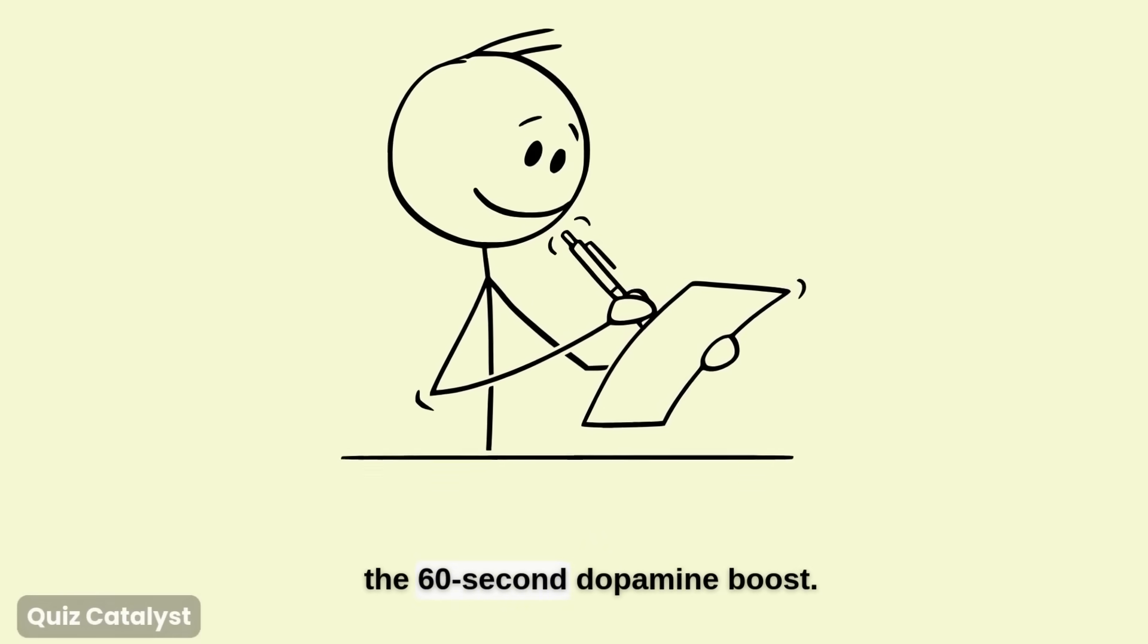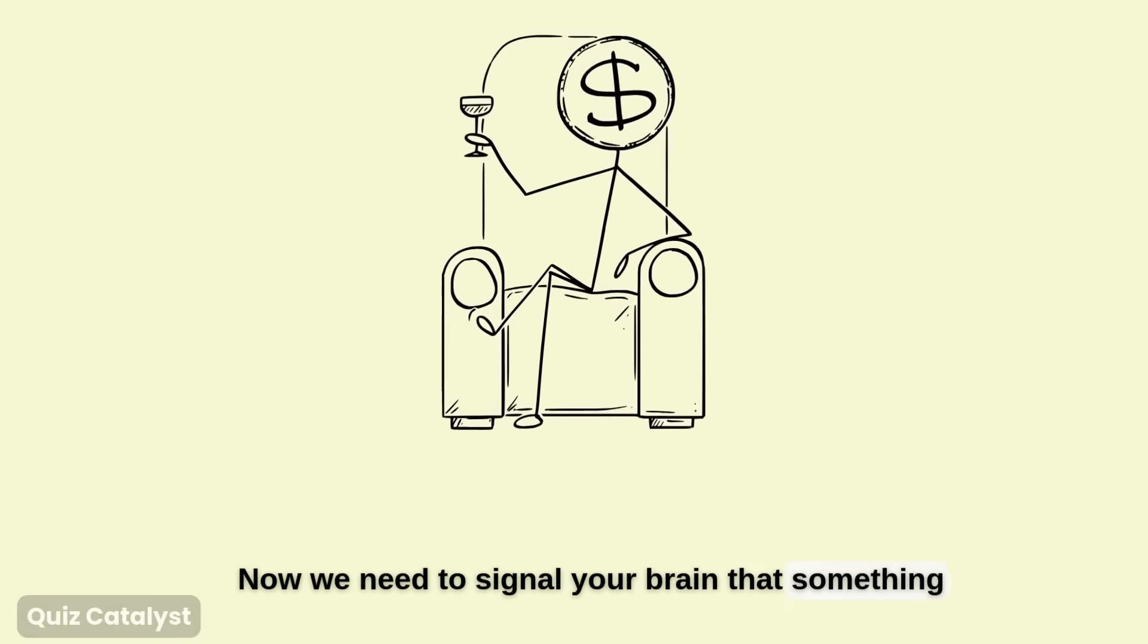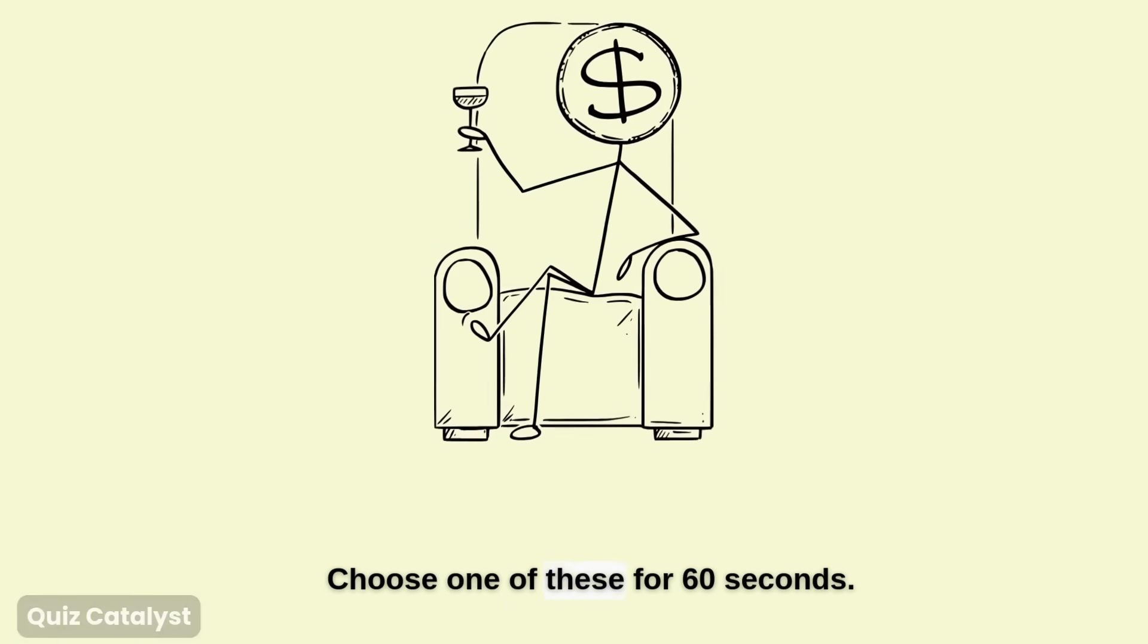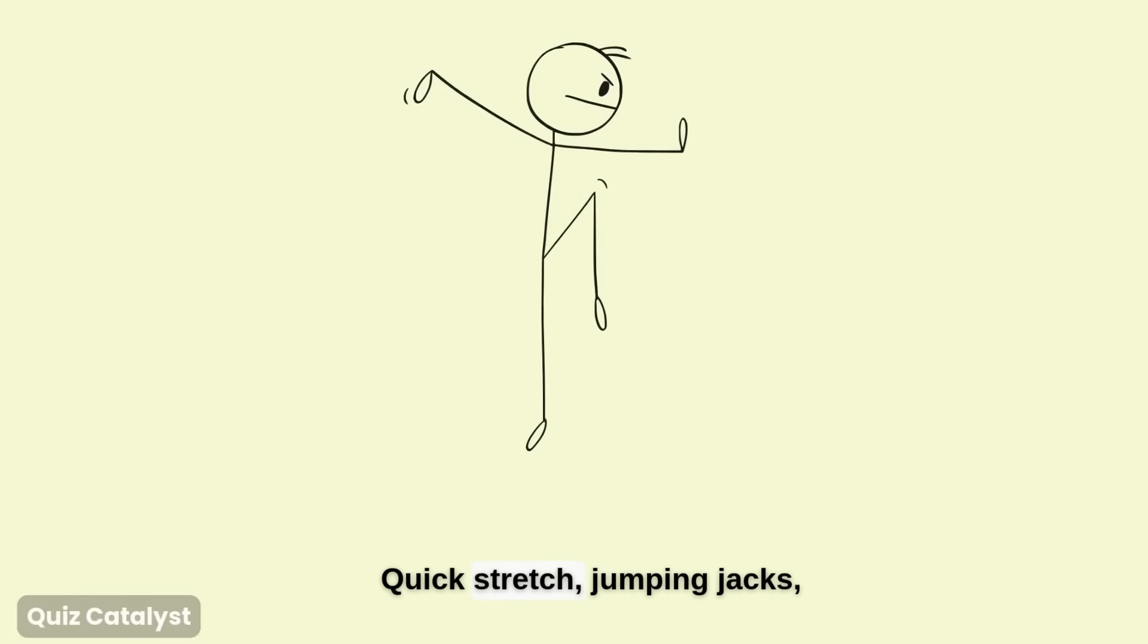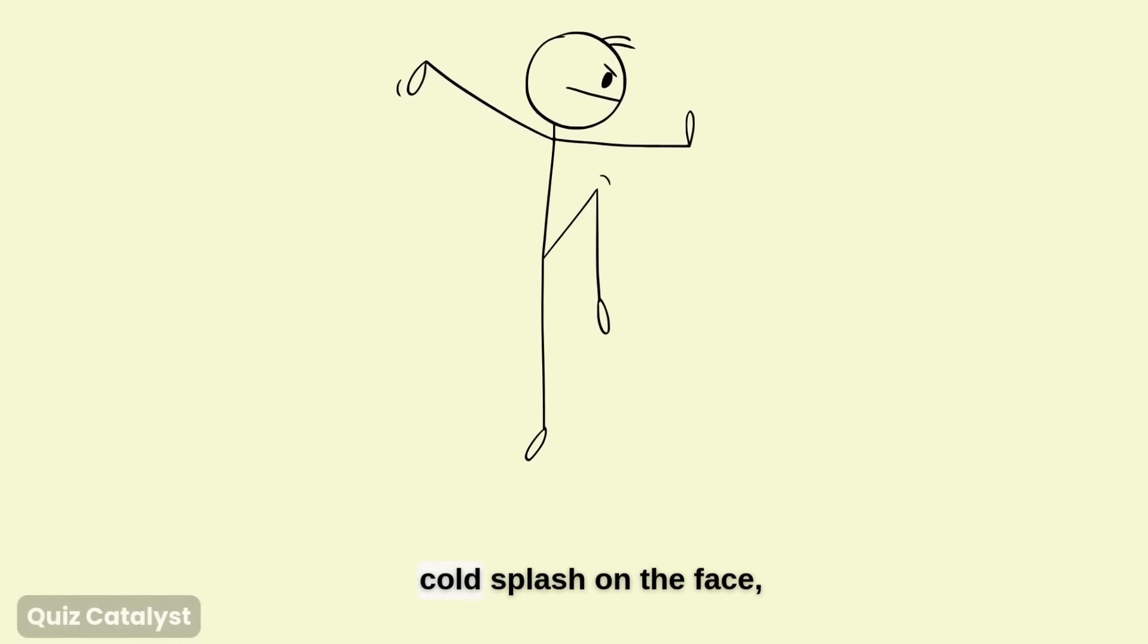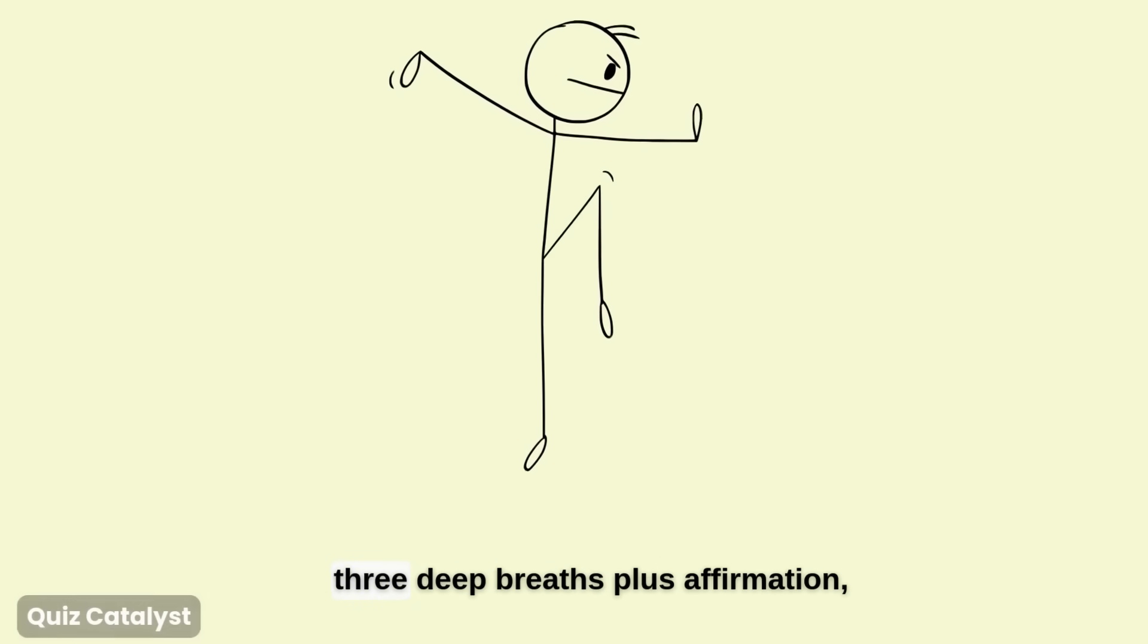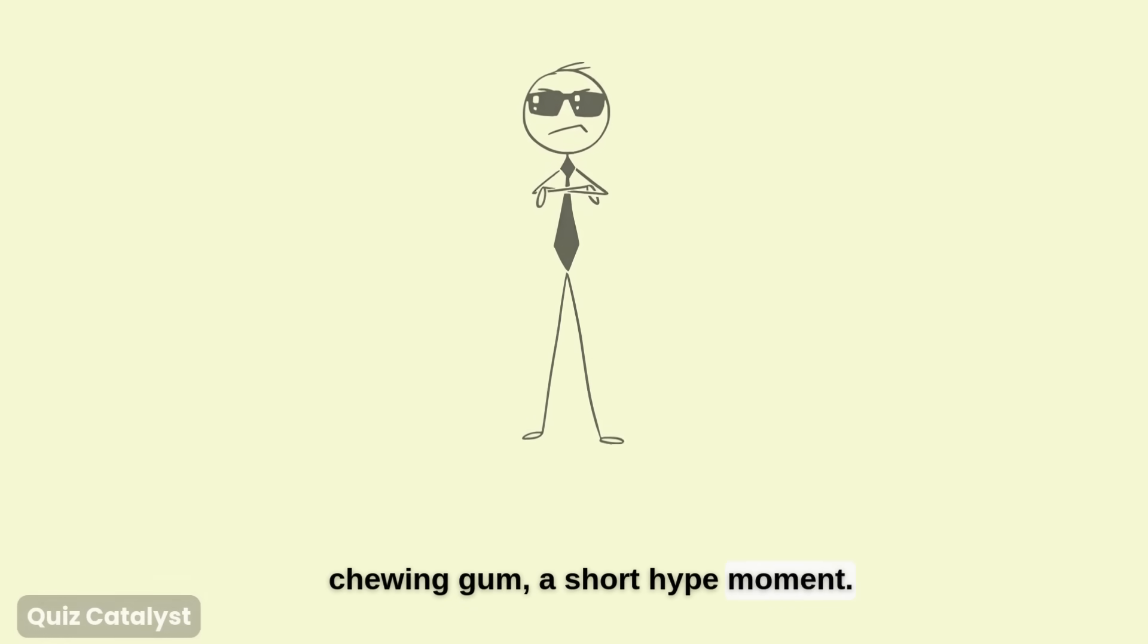Step two, the 60-second dopamine boost. Now we need to signal your brain that something rewarding is coming. Choose one of these for 60 seconds. Quick stretch. Jumping jacks. Cold splash on the face. Three deep breaths plus affirmation. Chewing gum. A short hype moment.